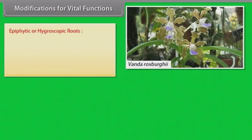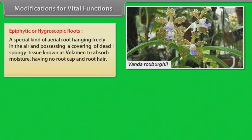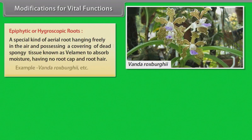Modifications for vital functions. Epiphytic or hygroscopic roots — a special kind of aerial root hanging freely in the air and possessing a covering of dead spongy tissue known as velamen, to absorb moisture, having no root cap and root hair. Example: Vanda, Rhizophoraceae, etc.